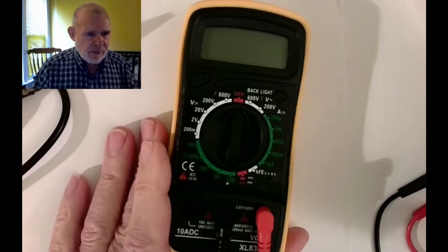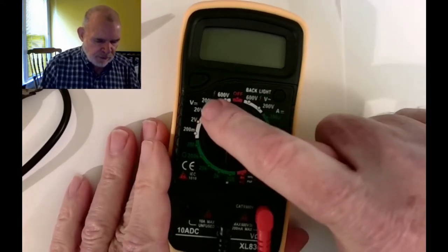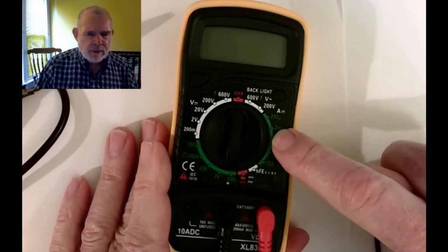So basically, there's three things we're going to measure: DC voltage, resistance, and possibly current.